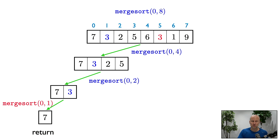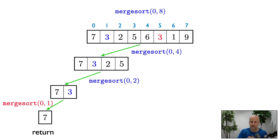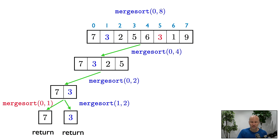I'll put the call to merge sort(0, 1) in red since now it's finished. So now we return to the call of merge sort(0, 2) and we continue to call merge sort on the right half of that interval. So we call merge sort(1, 2). This is again an interval of size 1, so again we're in the base case and we just return.